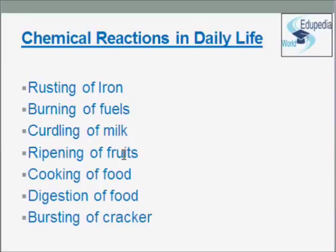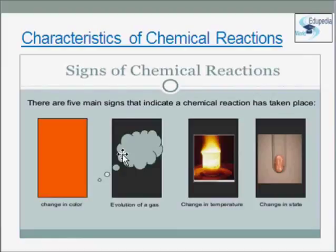These are the examples of chemical reactions in daily life. But now the next question which comes in our mind is: how do we know that a chemical reaction has taken place? This doubt will become clear from the discussion on the characteristics of chemical reactions. Reactants are converted into products, and this conversion is often accompanied by some features which can be observed easily. These easily observable changes are known as characteristics of chemical reactions. The important characteristics are change in color, evolution of gas, change in temperature, and change in state. These general characteristics will tell us whether a chemical reaction has taken place or not.